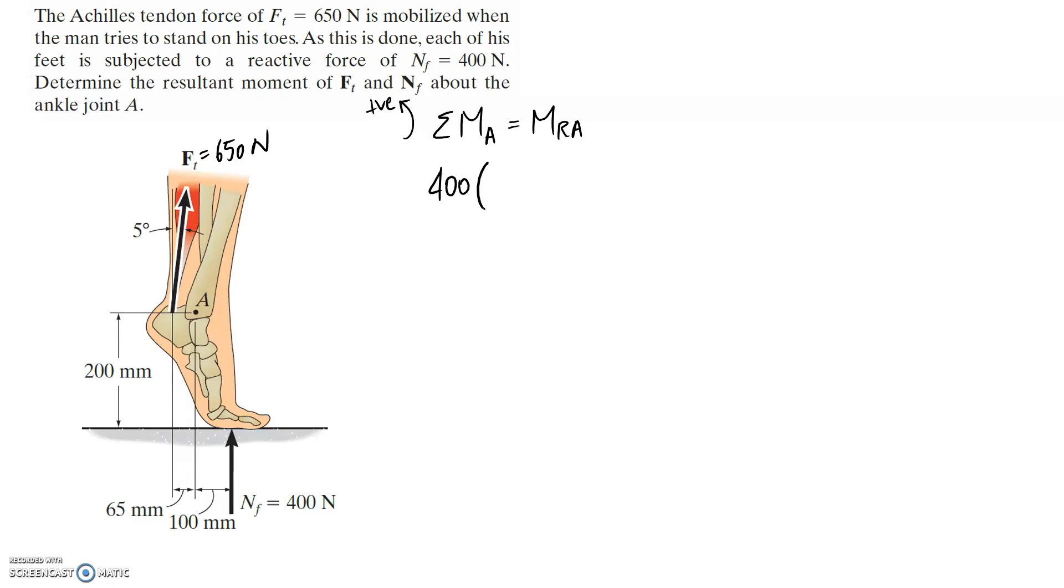The perpendicular distance is from your line of action to the closest point. So if this is your line of action for your force, it's going to be this distance in here where you have that perpendicular line you can draw. We're given it directly, it's going to be 100 millimeters. Let's put it in meters, that's going to be the same as 0.1.